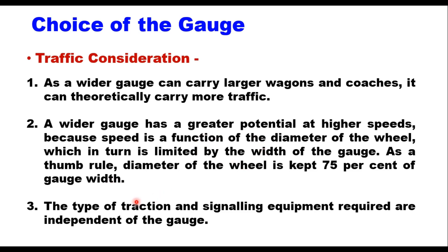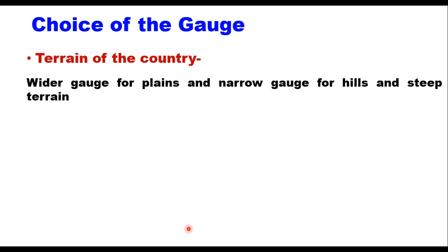The type of traction and signaling equipment required are independent of the gauge. The third factor is the terrain of the country. Wider gauges were adopted for keeping the train stable in the face of strong monsoon winds and are also suitable for plain areas. Narrow gauge is more suitable for hilly areas and steep terrain where gradients are more prominent and curves are more frequent.